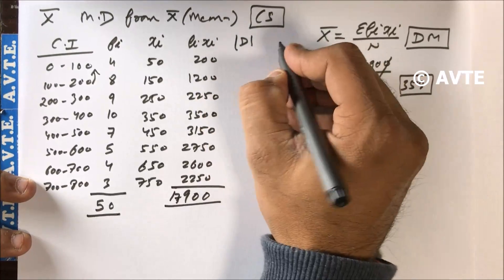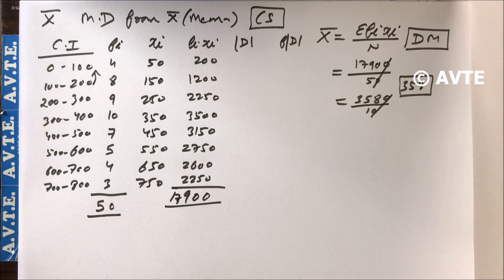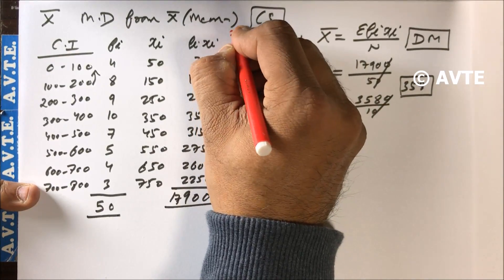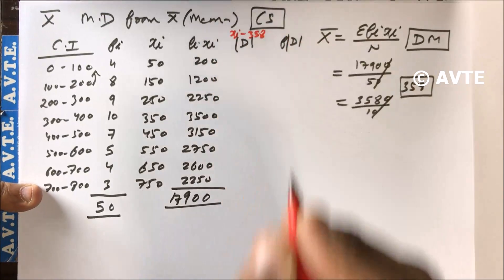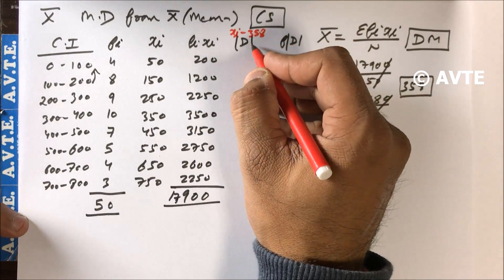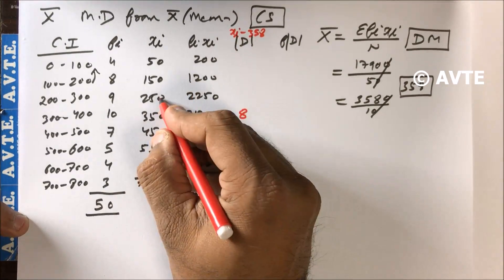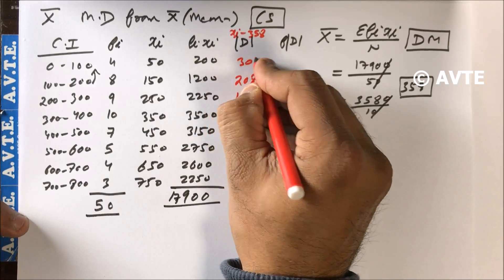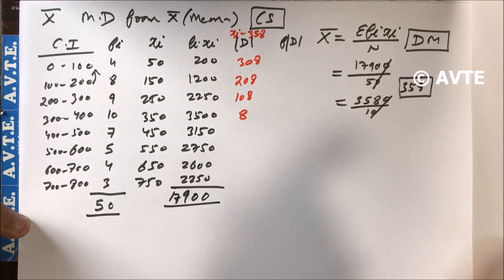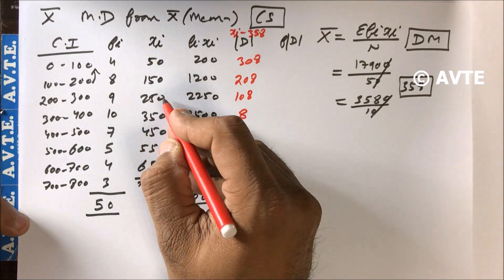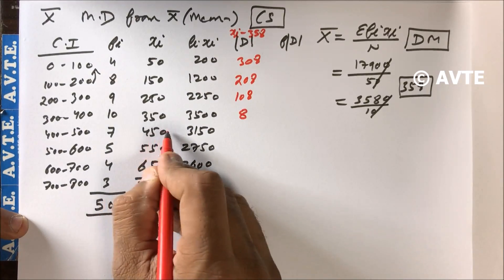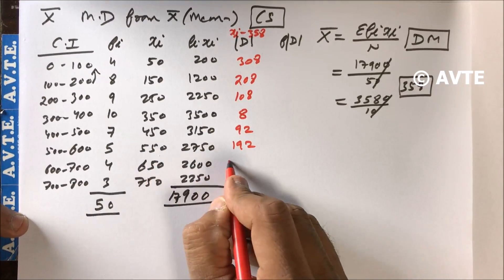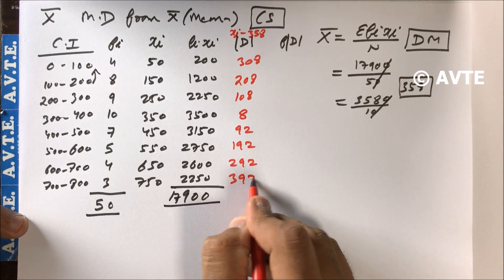Now we find mod D, subtracting 358 from each xi. The mod D values start at 8 for the first class, then increase by 100 for each class going left: 108, 208, 308. For classes above the mean, 450−358=92, then 192, 292, and 392. There is some tough calculation here.